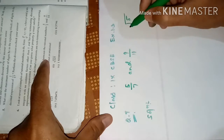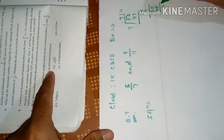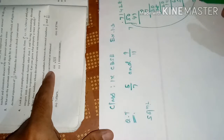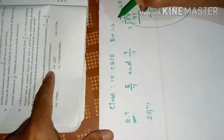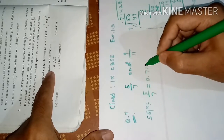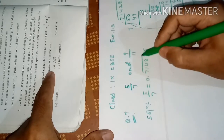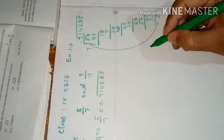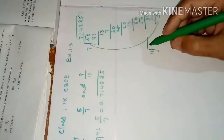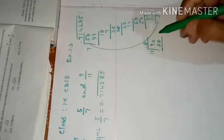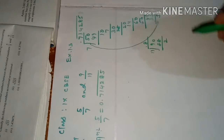5 divided by 7: from the long division, after 5 the remainder comes back to 5 again, meaning the digits will repeat. So 5/7 can be written as 0.714285̄ — 6 digits are repeated.